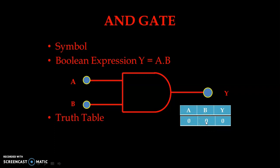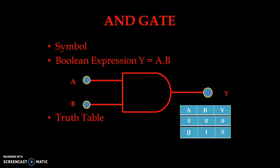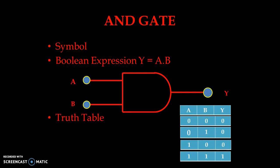When we apply 0,0 — A is 0, B is 0, meaning both A and B are given low input — in the AND gate we get a 0 or low output. Similarly, if we give 0 and 1, output is again low — that is 0. If we give 1 and 0, output is again 0. And finally if we give 1,1 — A input is high and B input is also high — output is high. In the AND gate, there is only one condition when we get high output: that is when all inputs are at a high level.